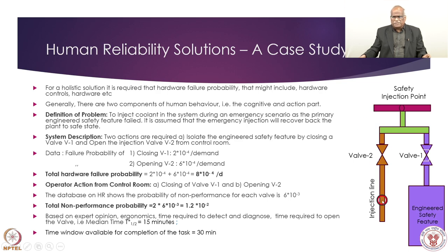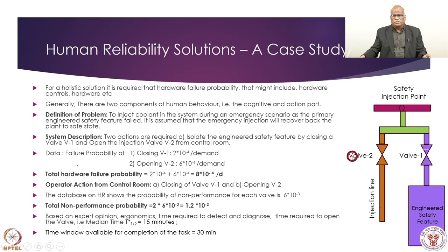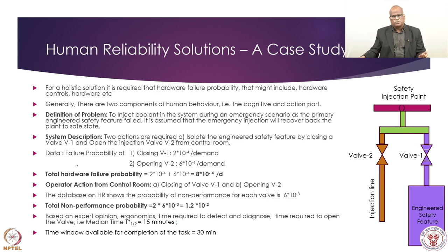If this automatic system does not work — with probability one in 100 or one in 1000 — there is a provision for directly injecting water from a tank. The required operator actions are: open valve V2, and close the isolation valve to avoid short-circuiting of water back into the system. So that water flow is directed to the correct injection point.